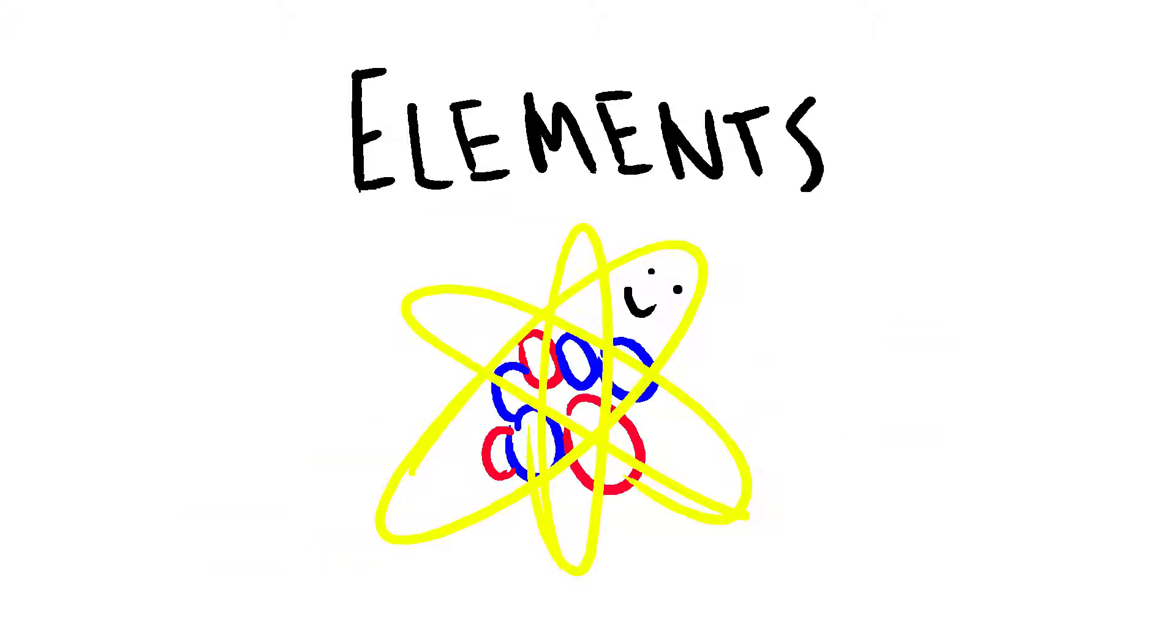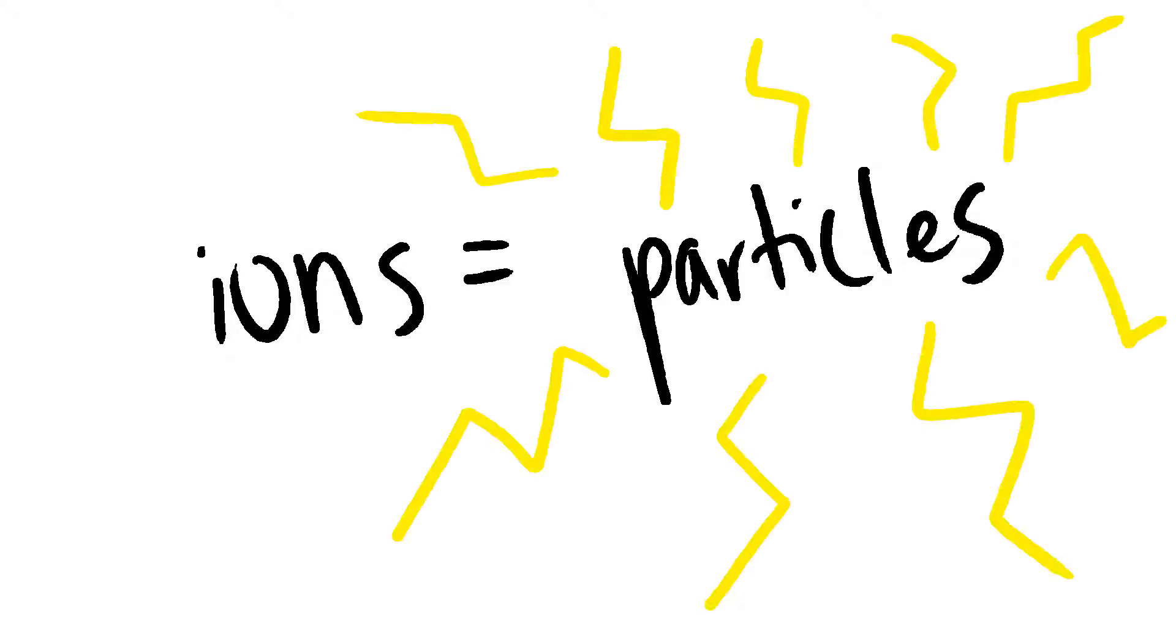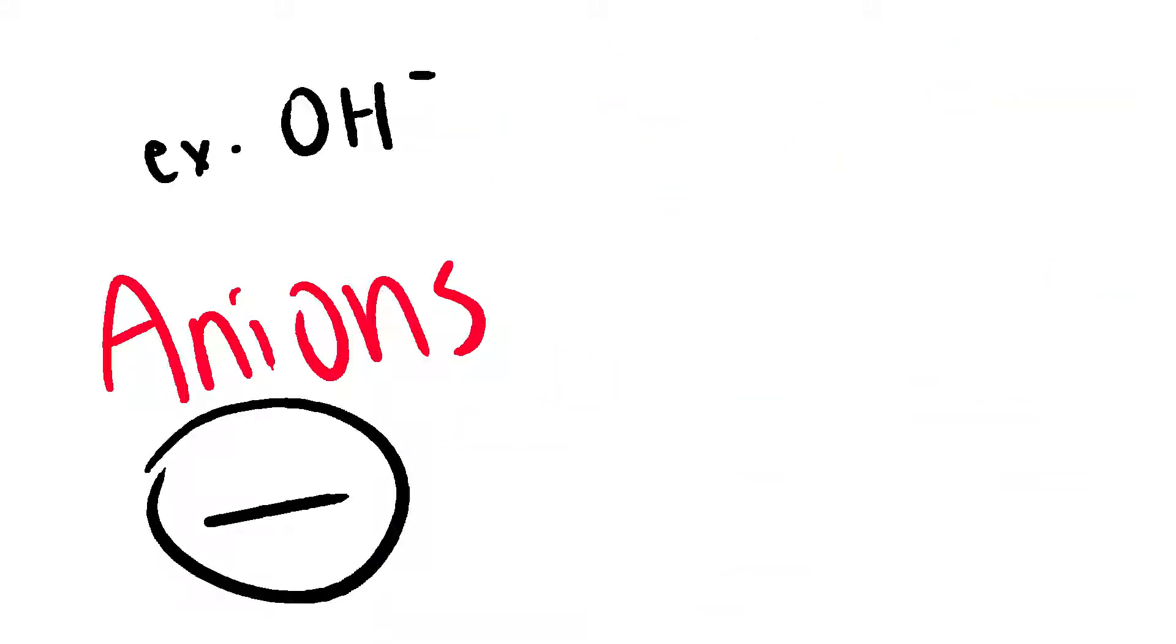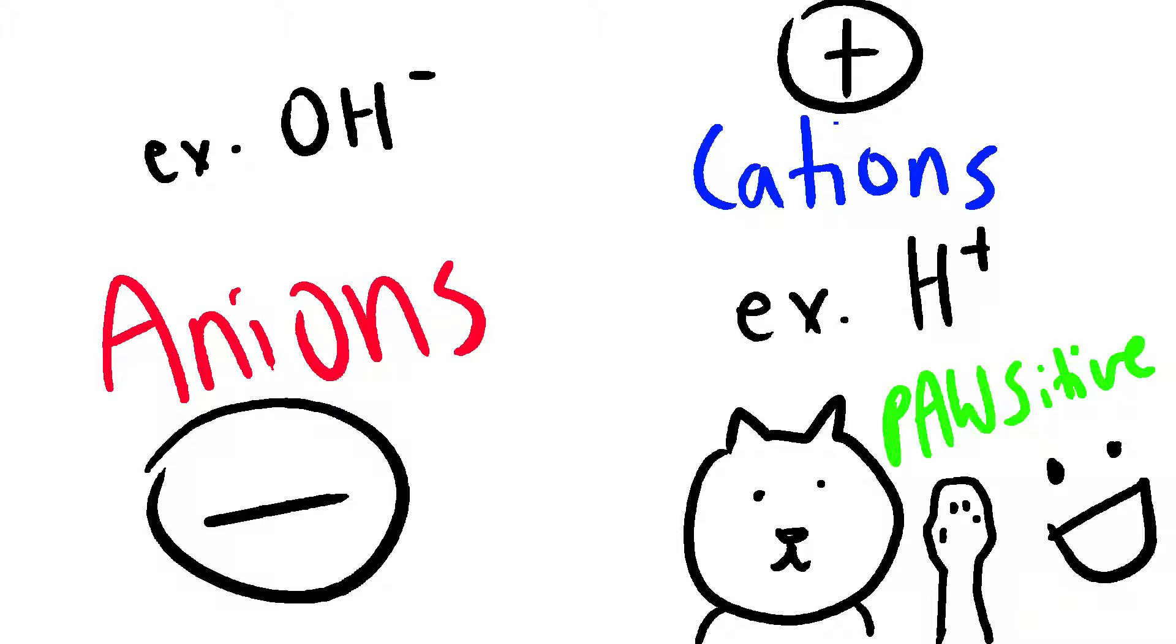Elements are found in various forms in the body. Ions are charged particles. Anions are negative, while cations are positive. Cats have paws, hence positive.